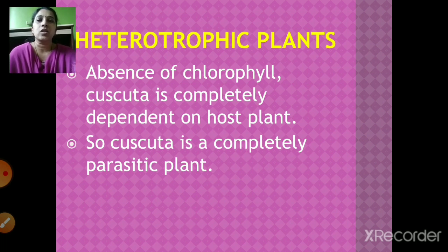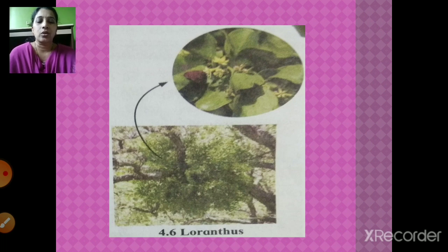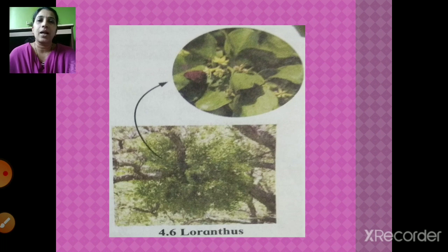Loranthus is called a partially parasitic plant. It is capable of photosynthesis, but it requires water and shelter, so it depends upon the host plant for those. Loranthus usually grows on mango trees. So the difference is: cascuta is a completely parasitic plant, while loranthus is a partially parasitic plant.